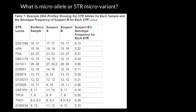For the next locus we have 15 and 16. Suspect A doesn't have any of these alleles, but Suspect B also has 15 and 16. If you compare these two tables you would see that the evidence sample is completely the same as Suspect B's genetic profile.